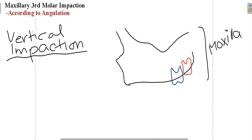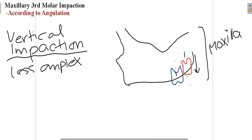That was all about mandibular third molar impaction classification. Now moving on to maxillary third molar impaction classification. For angulation, you can see the maxilla with the second molar drawn in blue and the third molar in red. The long axis of the third molar is parallel to the long axis of the second molar — this is vertical impaction. It is less complex to remove compared to other angulations, and it is the most common type of maxillary third molar impaction.